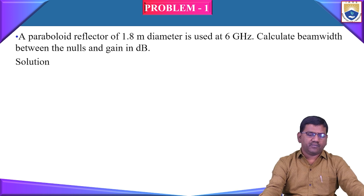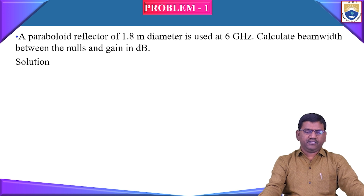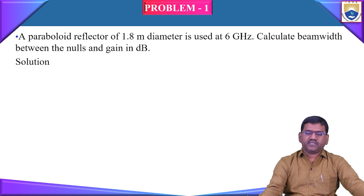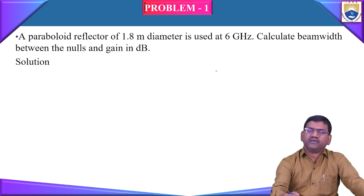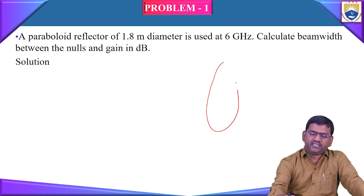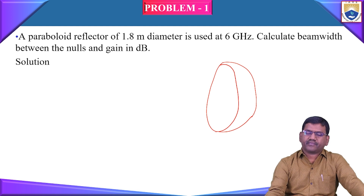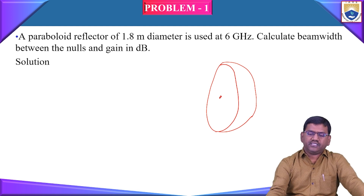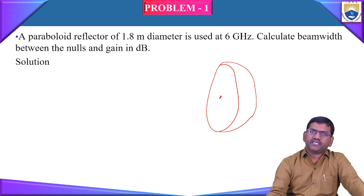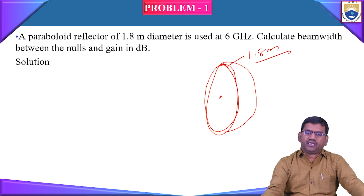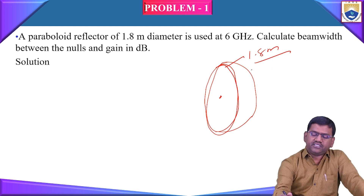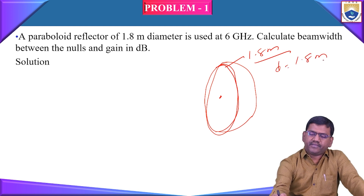We are going to calculate the paraboloid reflector of 1.8 meters in diameter. As per the given data, the parabolic reflector diameter is given as 1.8 meters. The paraboloid will be in three-dimensional representation. This is the focal point. The diameter d is given as 1.8 meters. Also, the frequency is given as 6 gigahertz.